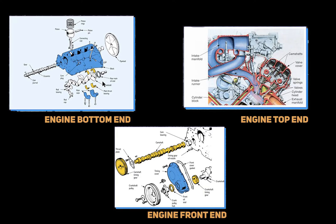To the top left here, we have the engine bottom end, and this is referring to the block, crankshaft, connecting rods, pistons, and other related components. To the right of that, we have the engine top end, and this is referring to the cylinder heads, valves, camshaft, and other related components. To the bottom of that, we have the engine front end, and this operates the engine camshaft, and sometimes the oil pump, distributor, and the engine sensors.